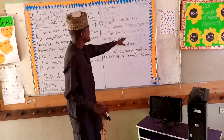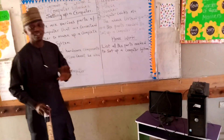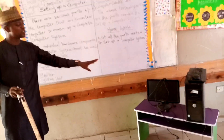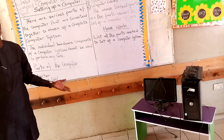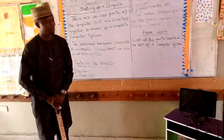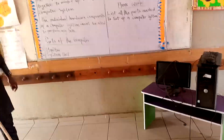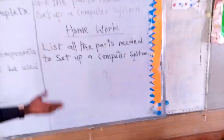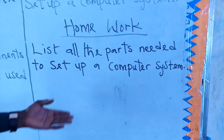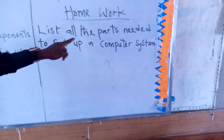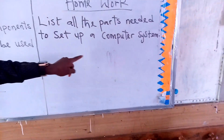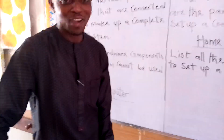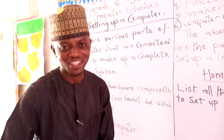The above listed parts are the parts needed to set up a computer system. If all these are not available, there is nothing to be called a computer system. For your homework or home activity, list all the parts needed to set up a computer system. Thank you, stay safe, and be good for your parents and for the country.